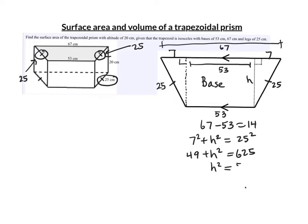625 minus 49 gives us 576. So h squared is 576, which means h, the square root of 576, is 24.